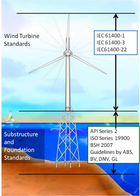For U.S. offshore turbines, however, more standards are needed, and the most important are: ISO 19900, general requirements for offshore structures; ISO 19902, fixed steel offshore structures; ISO 19903, fixed concrete offshore structures; ISO 19904-1, floating offshore structures — mono hulls, semisubmersibles and spars; and ISO 19904-2, floating offshore structures — tension leg platforms.